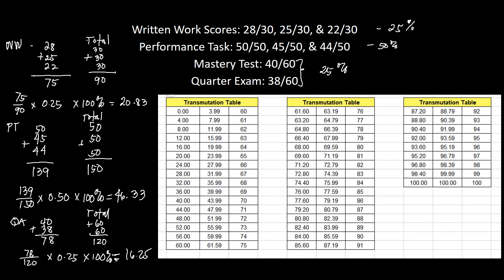Now we add all of the results together: 20.83 plus 46.33 plus 16.25. That gives us a total of 83.41.